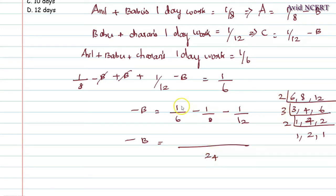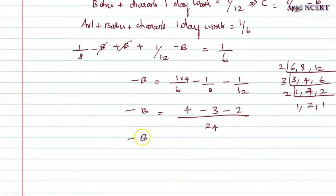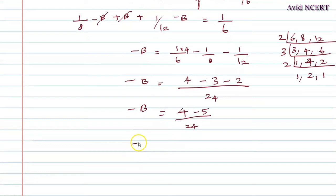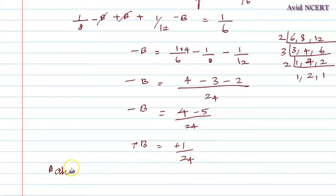So with LCM 24: 6 goes 4 times giving 4, minus 8 goes 3 times giving 3, minus 12 goes 2 times giving 2. Therefore, minus B equals 4 minus 3 minus 2 = minus 5, divided by 24, which gives minus B equals minus 1/24. The minuses cancel, therefore B equals 1/24. That is, Babu's one-day work equals 1/24.